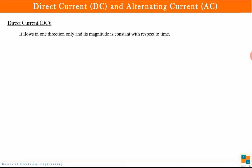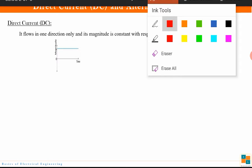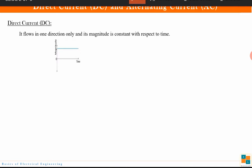This is how the direct current looks like. The x-axis represents time and the y-axis represents the magnitude. You can see that though the time is changing, the magnitude is constant. And secondly, it is positive all the time. Now I said it flows in one direction — that does not mean it is always in one direction.